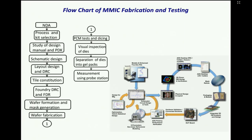Once fabricated, there is something called a PCM test. Then dicing — dicing means you dice individual chips from the wafer. Then visual inspection of dies to see there is no anomaly, separation of dies into gel packs, and measurement using a probe station or measurement after packaging.